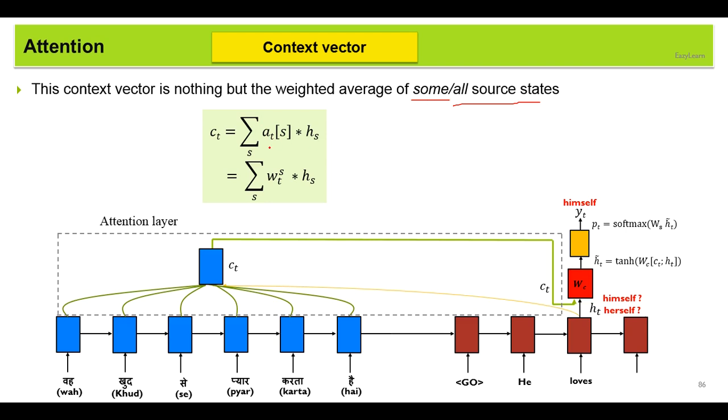So it is the alignment factor which contains the weights. We can represent each weight by wts. What is the interpretation of wts? wts denotes how important the sth hidden state is to generate the tth target sentence word. Now all we need to do is to derive this alignment vector at. If we somehow get this alignment vector, we can just take the weighted average based on these values of the source states and derive the context vector.